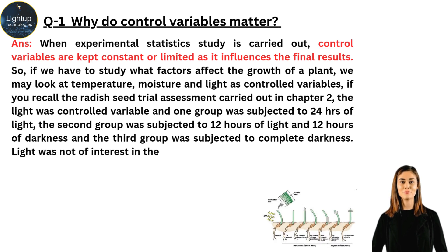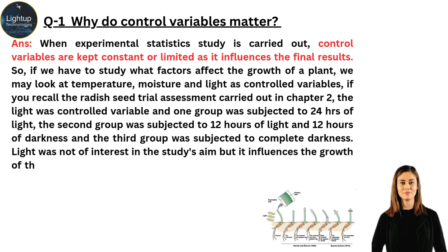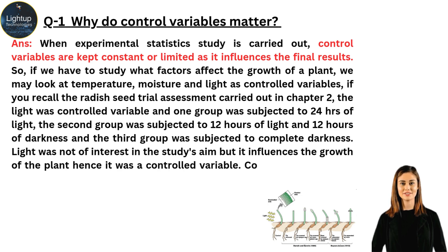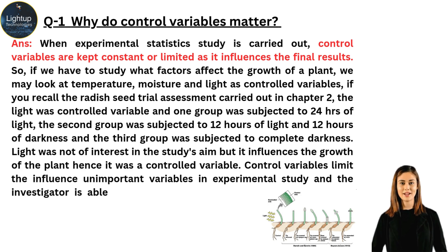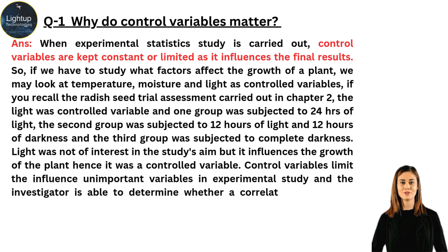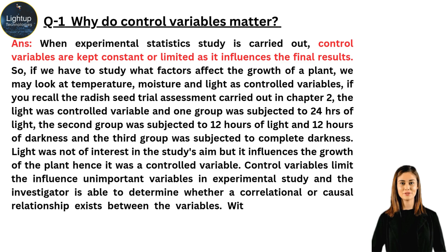Light was not of interest in the study's aim, but it influences the growth of the plant, hence it was a controlled variable. Control variables limit the influence on important variables in an experimental study, and the investigator is able to determine whether a correlational or causal relationship exists between the variables.